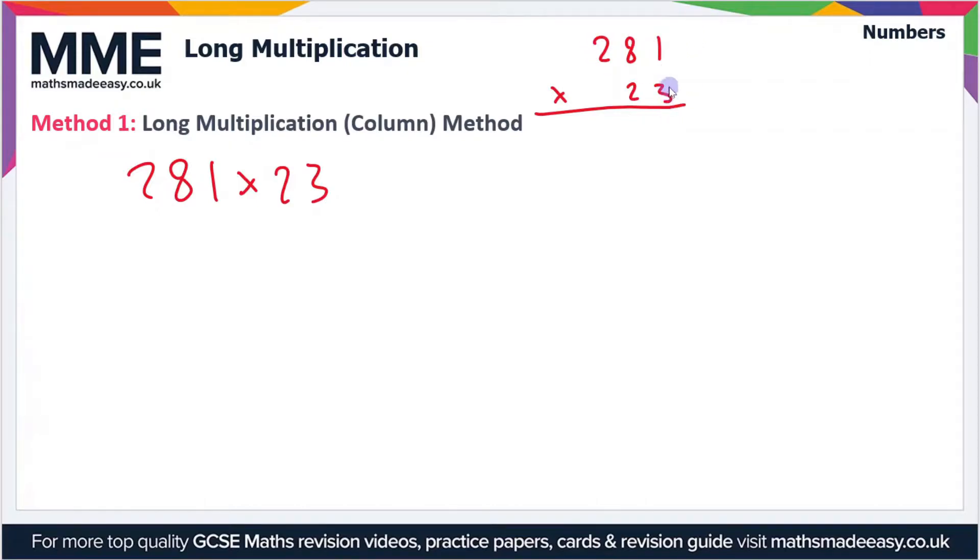We'll start off doing 3 times 1 which is just 3, and then we put zero in when we do the 3 times 8 because the place value is different - so we're dealing with 8 tens here rather than just one single digit. So we've got 3 times 8 which is 24, and then the zero here turns that into 240. We do the same thing but we put two zeros in now for the next step which is 3 times 2, so that's 6.